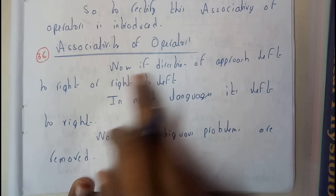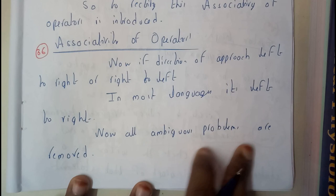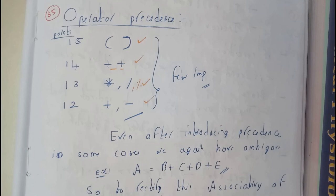Now, the direction of approach says whether it is left to right or right to left. In most languages it is left to right. Now all ambiguity problems are removed.